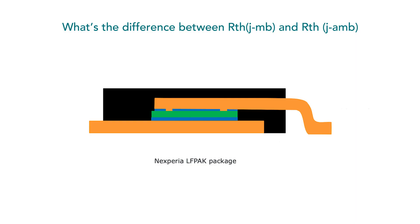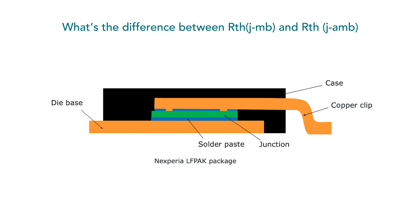When operating MOSFETs in applications, the heat propagates through the die base, the copper clip, the solder paste, and other materials within the structure.